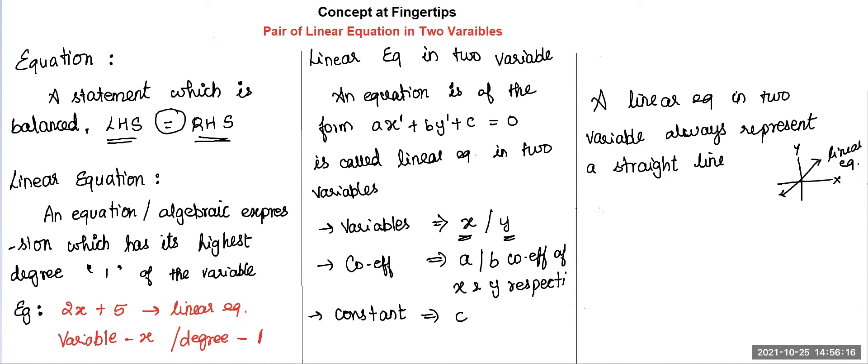Now, we are going to see a pair of linear equations. A pair in the sense 2, isn't it? Therefore, the pair of linear equations will look like a1x + b1y + c1 = 0 and a2x + b2y + c2 = 0.